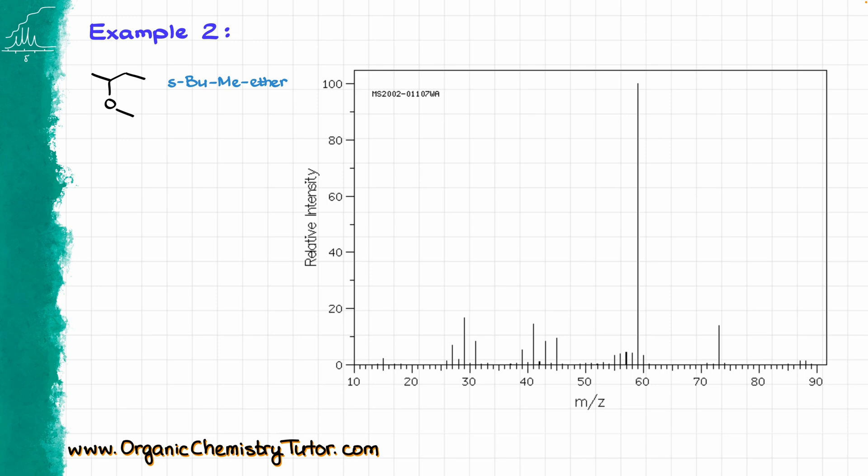Here, I have sec-butyl methyl ether, or methoxybutane, if you like. This molecule has the molecular formula of C5H12O, with a molecular weight of 88. And look at that, we actually do have the molecular ion peak for that one. It's a very small one on the right side, but nonetheless, we do detect that guy. Then, looking at my molecule, I see that I have a secondary position, secondary carbon, next to an oxygen.